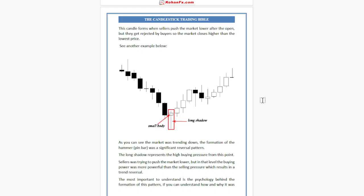As you can see, the market was trending down. The formation of the Hammer pin bar was a significant reversal pattern. The long shadow represents high buying pressure from that point. Sellers were trying to push the market lower, but at that level, the buying power was more powerful than the selling pressure, which resulted in a trend reversal.